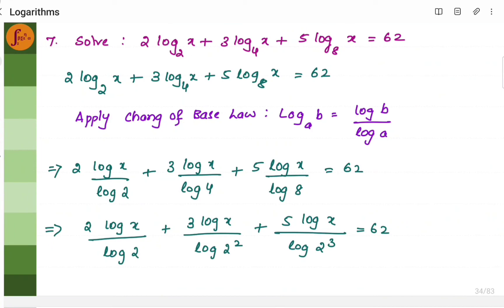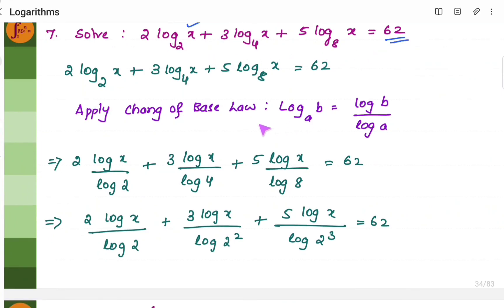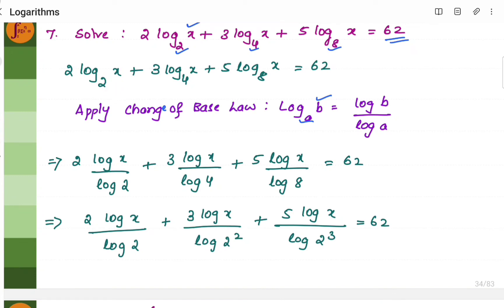This is another example where we have to solve — find the value of x. In this case, we will have to use the change of base law. The change of base law states that if you have log b to the base a, you can write it as log b divided by log a. We will have to use this because you have different bases here. When you have different bases, we cannot simplify the equation — you will have to get it to a common base before applying any logarithmic laws.